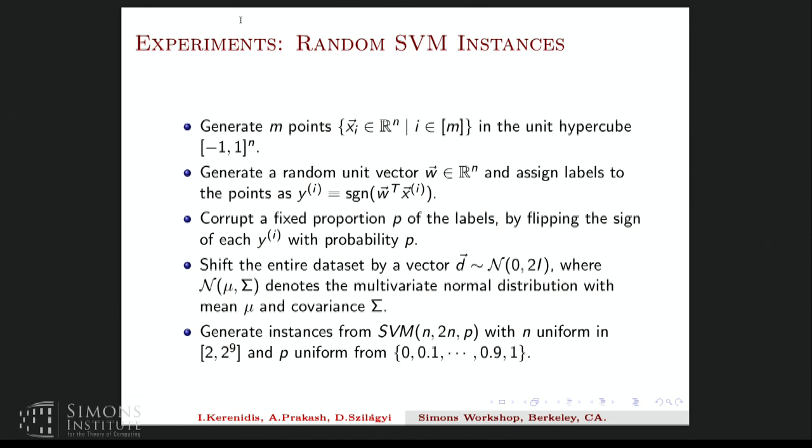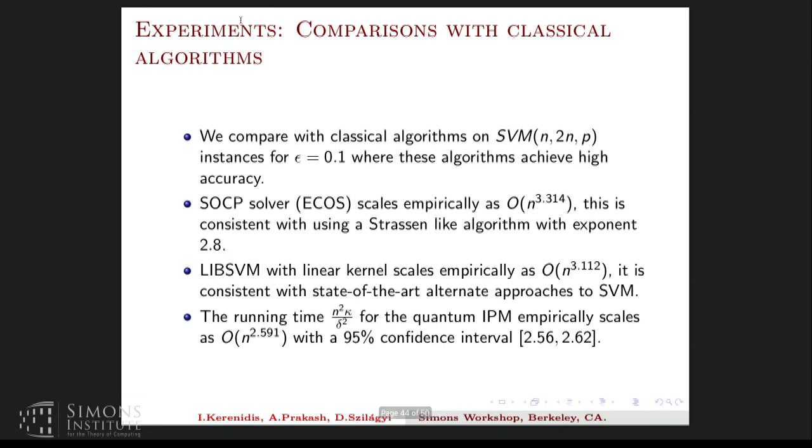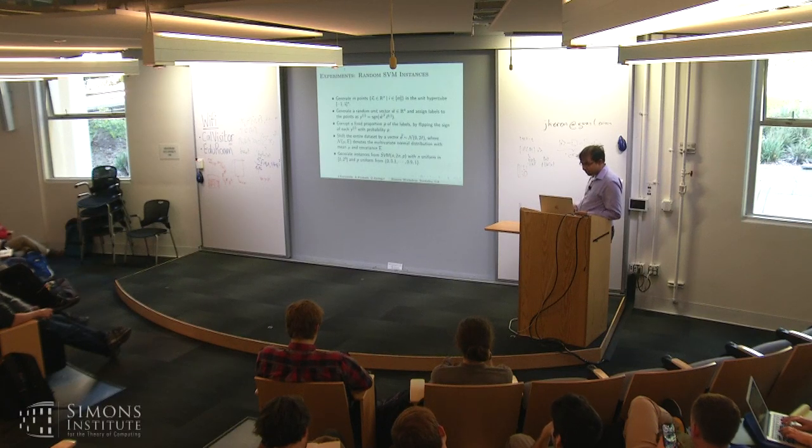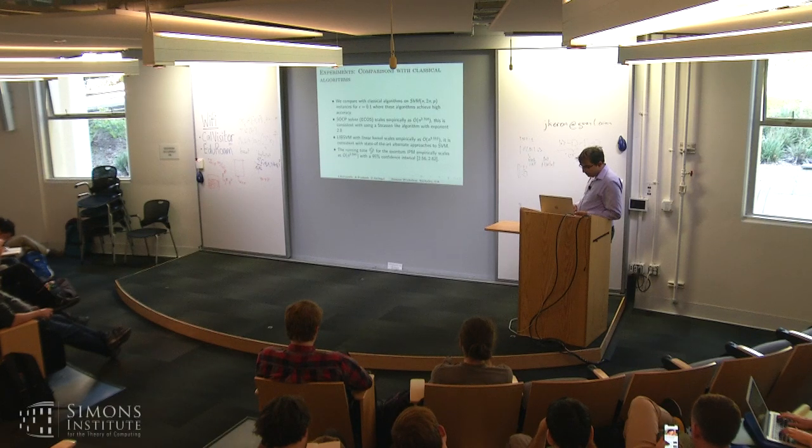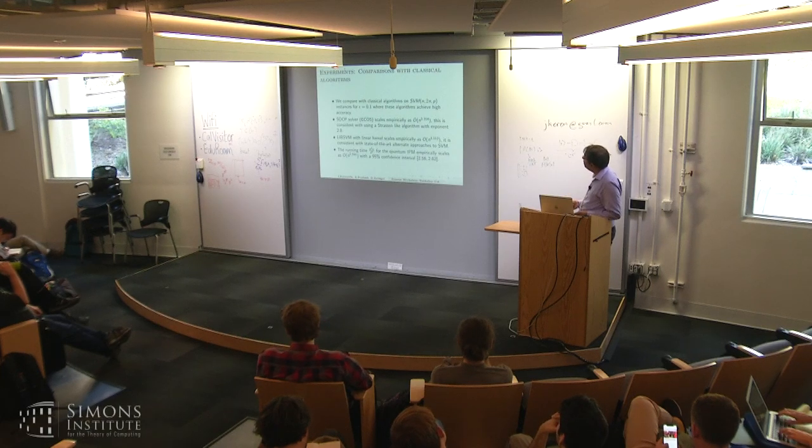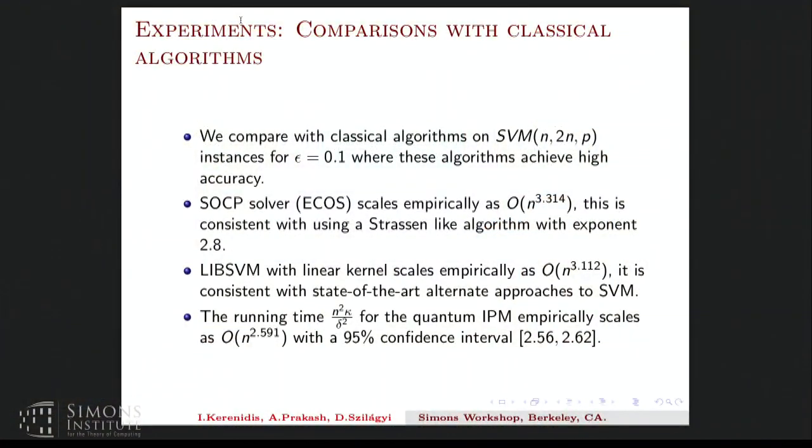So that's the definition of a random SVM. So we went for this because we wanted to have an unstructured data set where no algorithm could be using some structure of the data to get an advantage. So the first observation is that you don't need to solve the SOCP to very high accuracy to get good classification results. So even a modest precision like epsilon equal to 0.1 is good enough to get high accuracy results for the SVM. And that's good for the quantum algorithm because one does tomography and incurs one over epsilon square penalty for the precision.